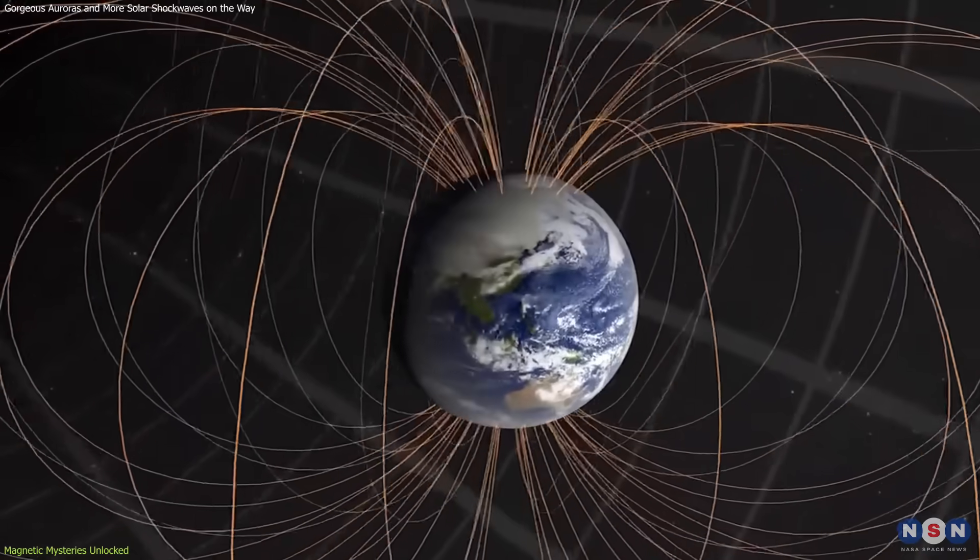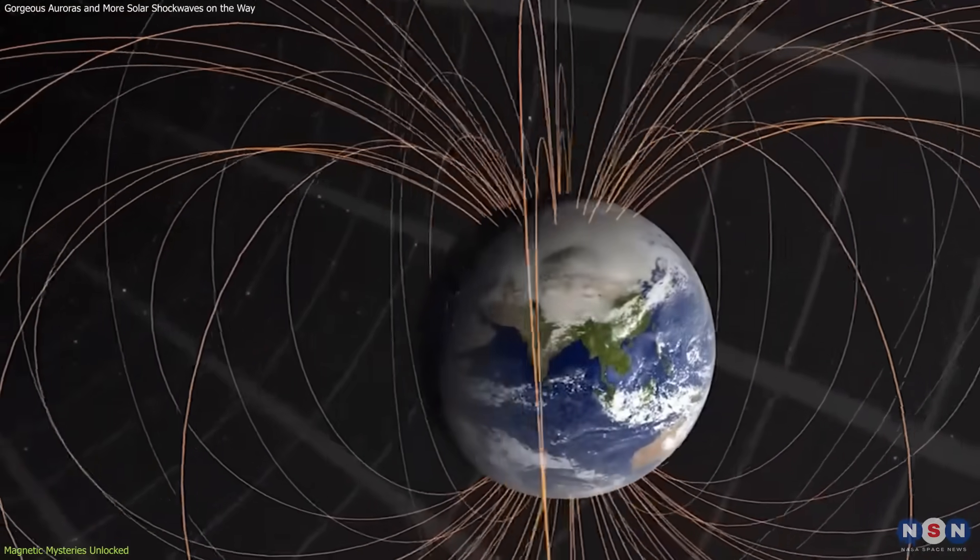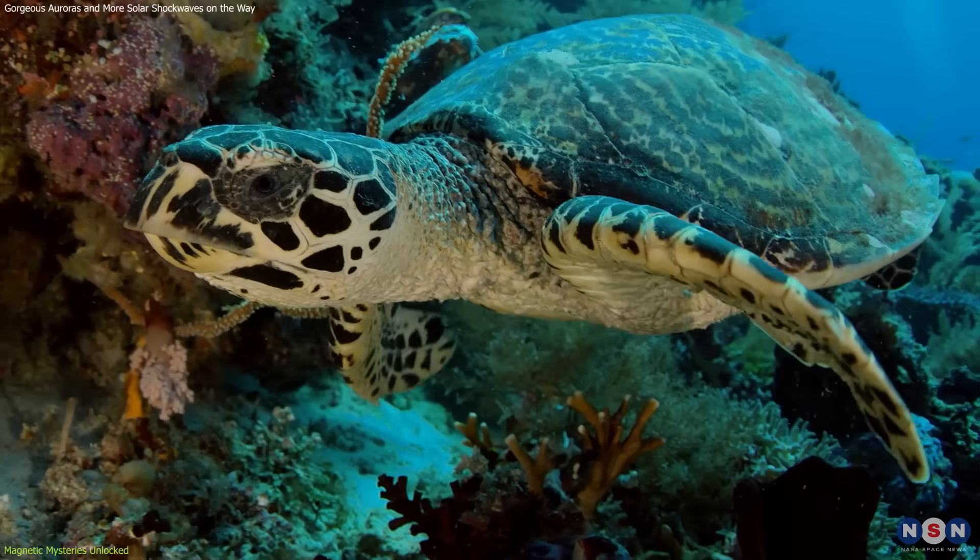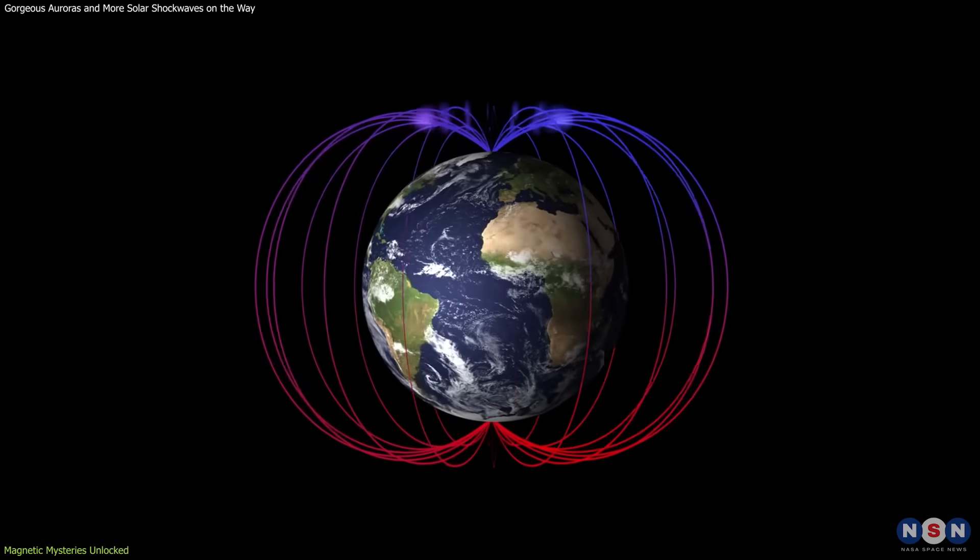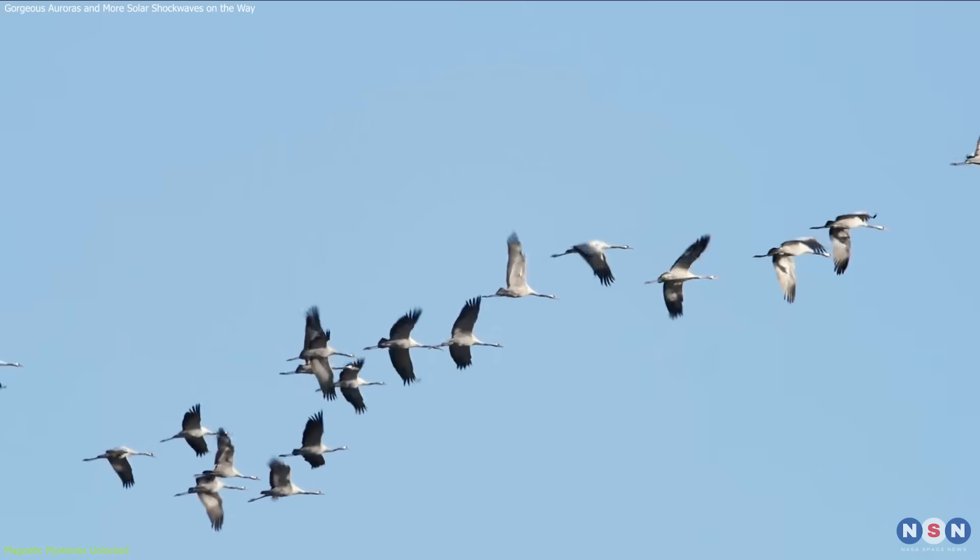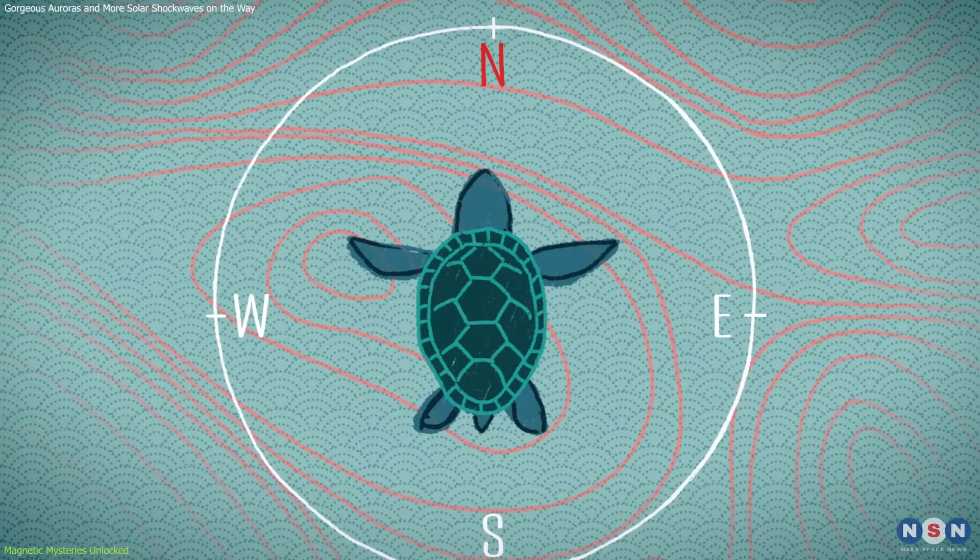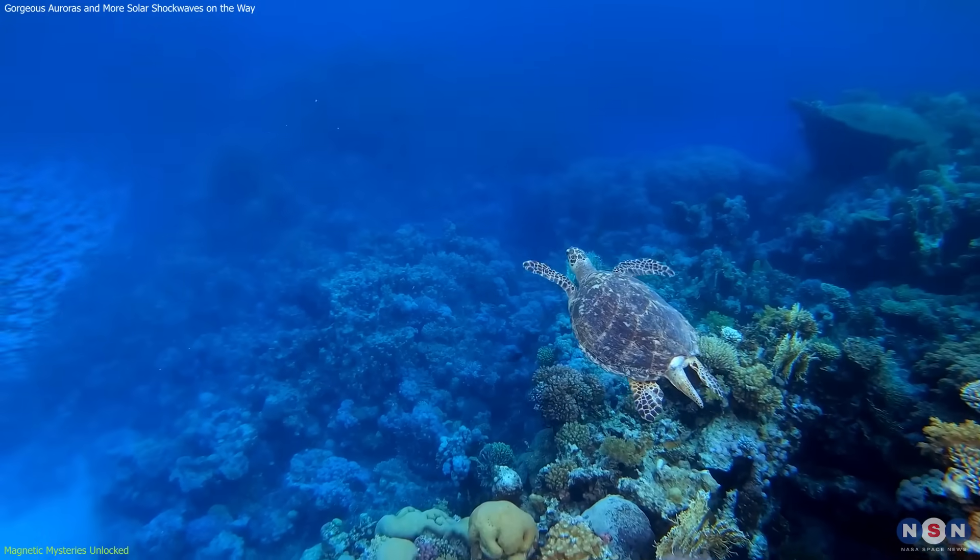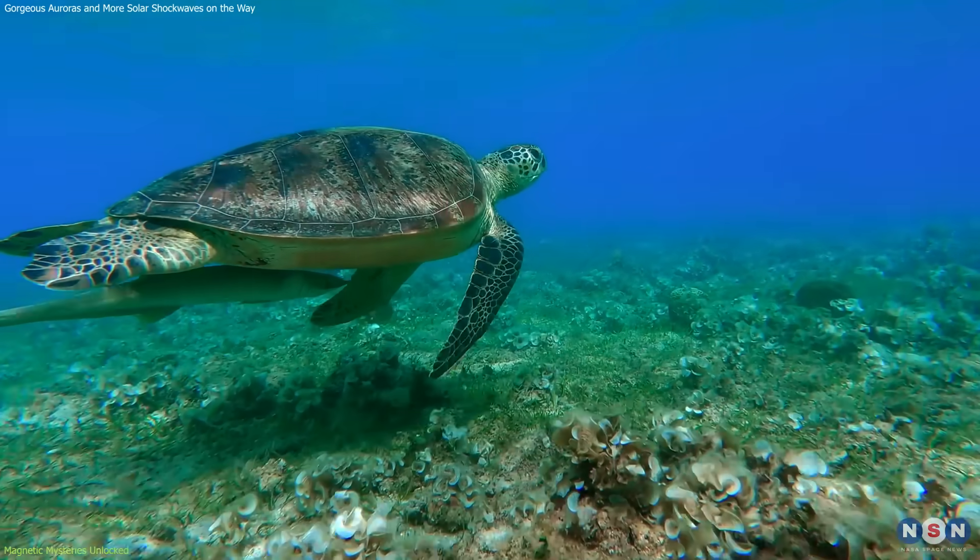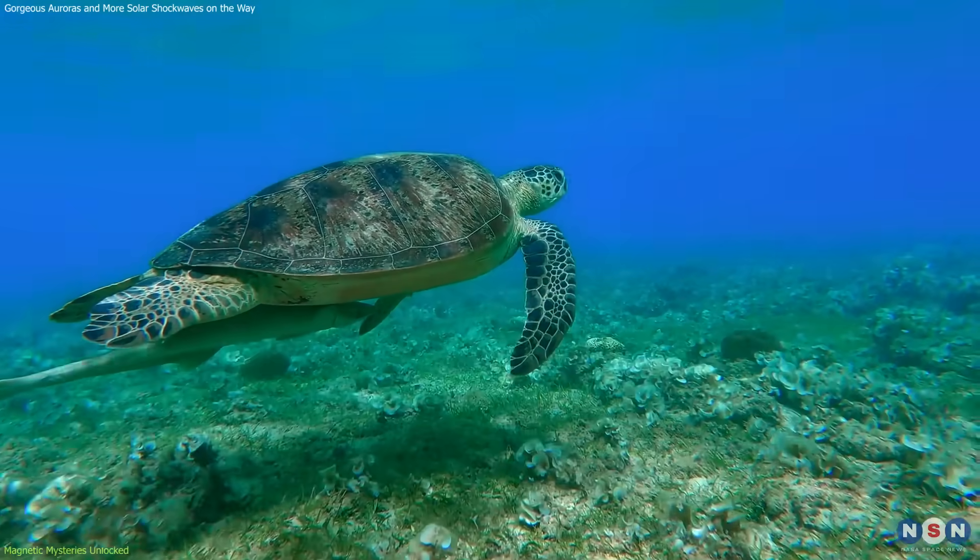Moreover, Earth's magnetism plays a pivotal role in the biological world. Many species, from birds to marine life like sea turtles, rely on geomagnetic fields for navigation during their long migratory journeys. This magnetic sense, known as magnetoreception, is a fundamental aspect of survival for these species, helping them navigate vast and often featureless oceans or skies.